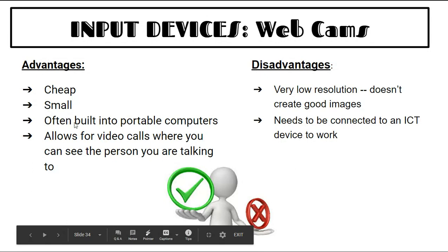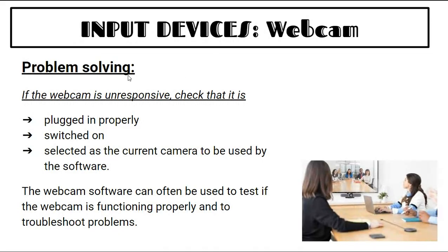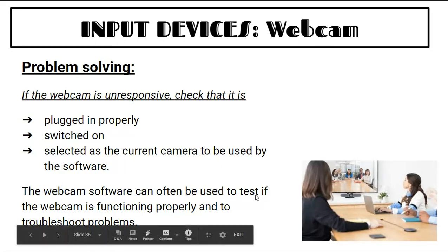Advantages of webcams: they're cheap, small, often built into portable computers, and allow video calls where you can see the person. Disadvantages: very low resolution, not often a good image quality, and must be connected to an ICT device to work. Problem solving: check if it's plugged in and switched on. If you have two cameras, make sure the correct one is selected in software. Use webcam software to test and troubleshoot.